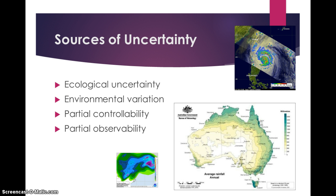Several sources of uncertainty should be considered in adaptive environmental planning and management. For example, ecological uncertainty recognizes that the nature of system responses to management actions is not completely known. Uncertainty in environmental variation includes inherent background variability — keep in mind that environmental systems being managed are dynamic and ever-changing. Variation in annual precipitation amount and intensity, input of pollutants, temperature, and external stochastic events such as fire or large storms are all sources of uncertainty in environmental variation.